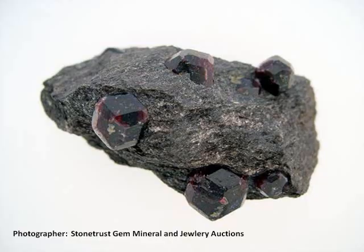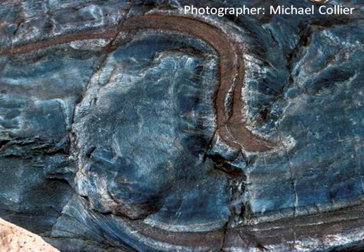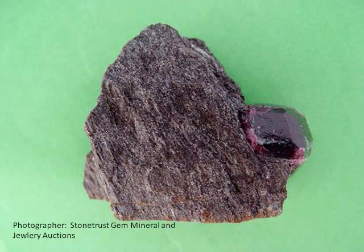Schist is formed from metamorphosed phyllite, which in turn was formed from slate, which was originally a shale. This example shows crystals of garnet in schist. This photograph shows the folded and deformed Clear Creek of Vishnu Schist, a basement rock of Grand Canyon. Here is yet another example of a schist with garnet crystals.